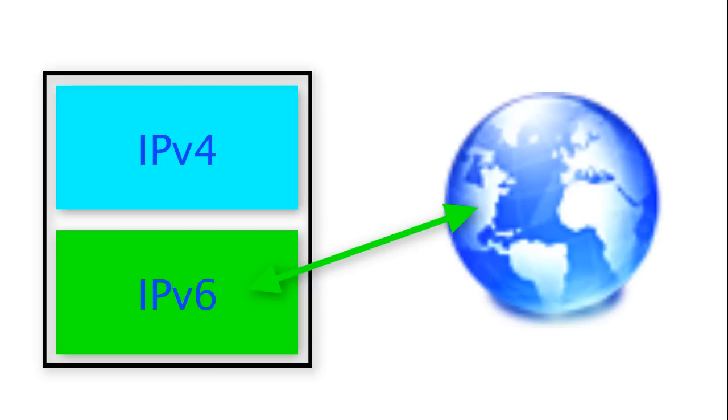What happy eyeballs attempts is to disconnect the IPv6 connection attempt pretty early on and switch back to IPv4 before the operating system would usually realize that IPv6 connectivity is broken.